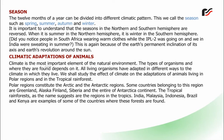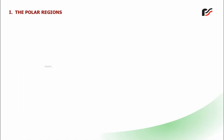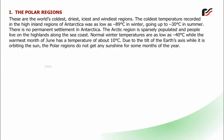The tropical rainforest, as the name suggests, are the regions in the tropics. India, Malaysia, Indonesia, Brazil, and Kenya are examples of countries where these forests are found. The polar regions are the world's coldest, driest, iciest, and windiest regions. The coldest temperature recorded in Antarctica was as low as –89°C in winter, going up to –30°C in summer. There is no permanent settlement in Antarctica. The Arctic region is sparsely populated, with people living on highlands and along the sea coast. Normal winter temperatures are as low as –40°C, while the warmest month of June has a temperature of about 10°C. Due to the tilt of the Earth's axis while it is orbiting the Sun, the polar regions do not get any sunshine for some months of the year.